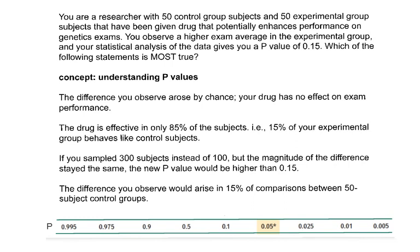So now, say we have a p-value, and let's say in this case our p-value was something like 0.15. We had done an experiment in this case. I'm a researcher, and I've done an experiment using a drug that might enhance performance on genetics exams. So I had a group of 50 experimental subjects that got the drug, but of course I had to have a control group that didn't get the drug. And I gave them a genetics exam, and let's say I did observe a difference between the two groups. I observed a higher exam average in the experimental group.